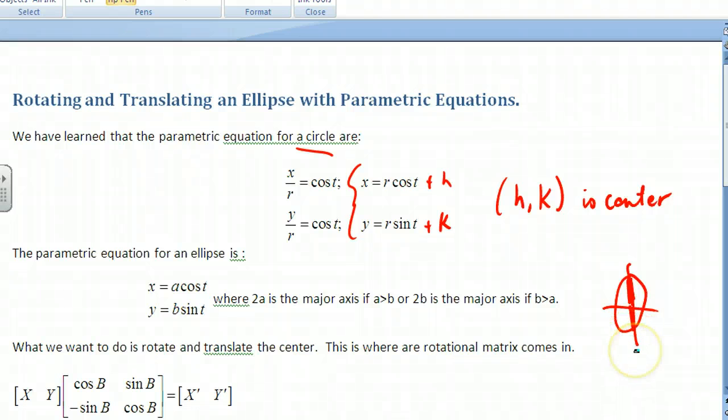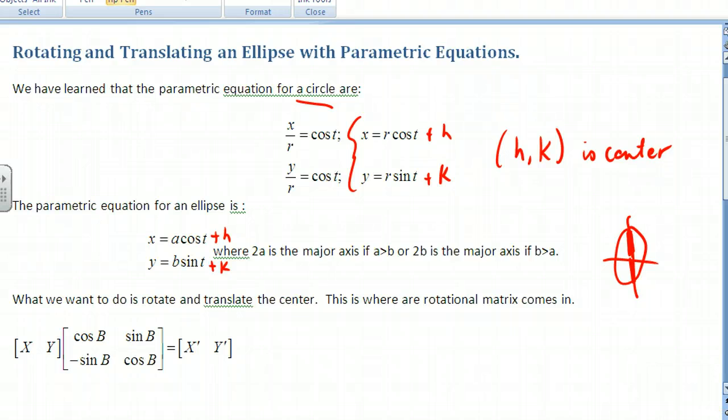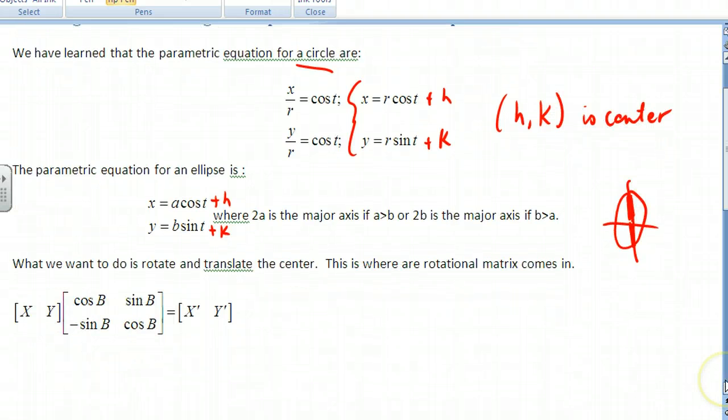Now what we can do with this one as well is we can translate this too. And if I want a different center, I could do plus h and plus k. We don't do minus because this is the x value. We're adding the h to whatever it is, depending upon if h is positive or negative. So that gives us our center and that gives us just a regular ellipse in parametric form.